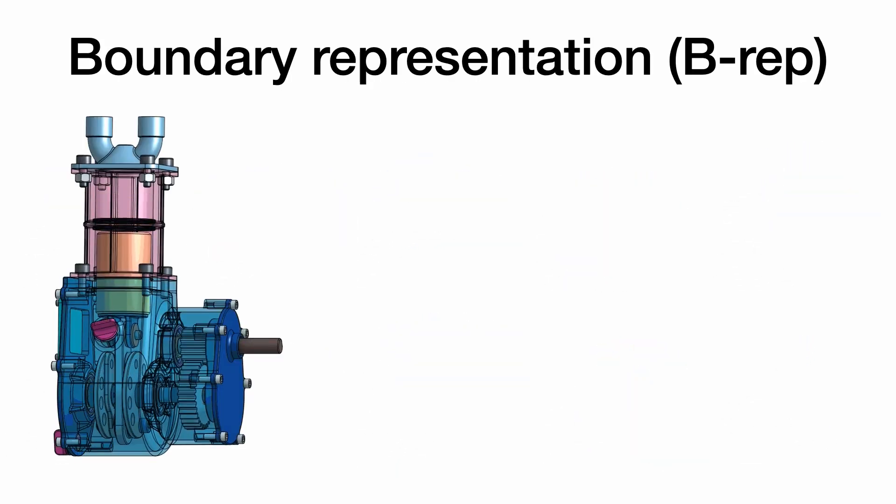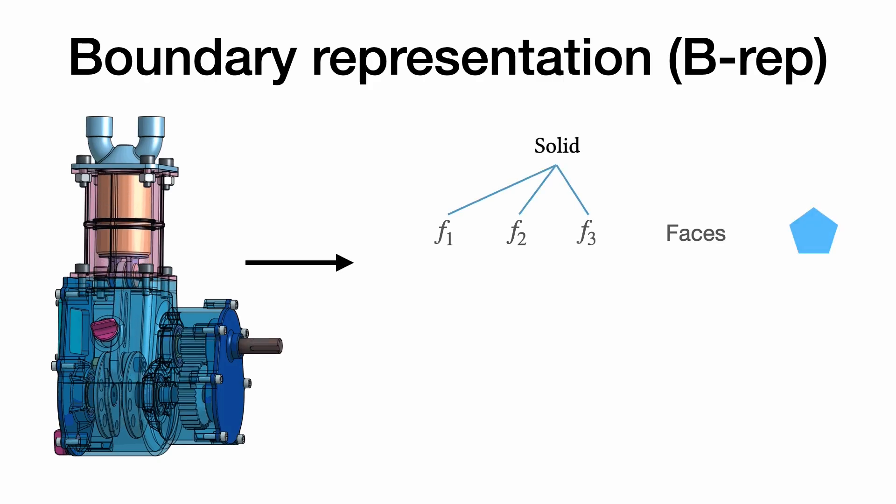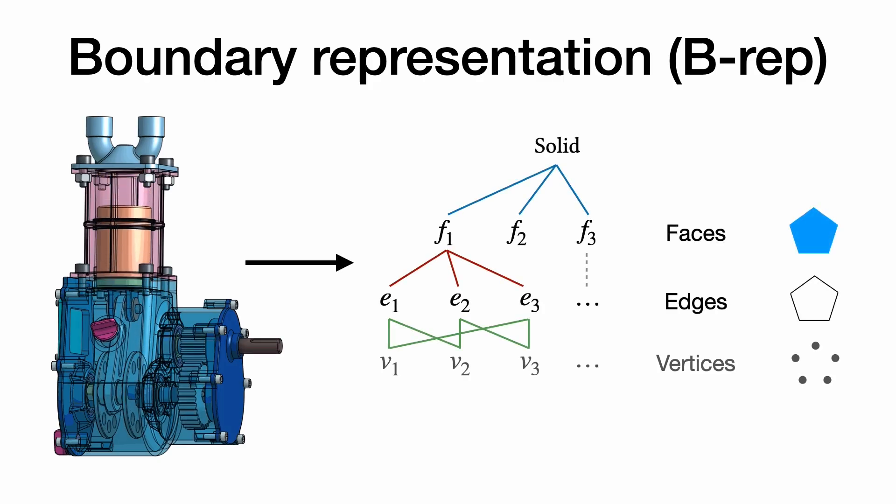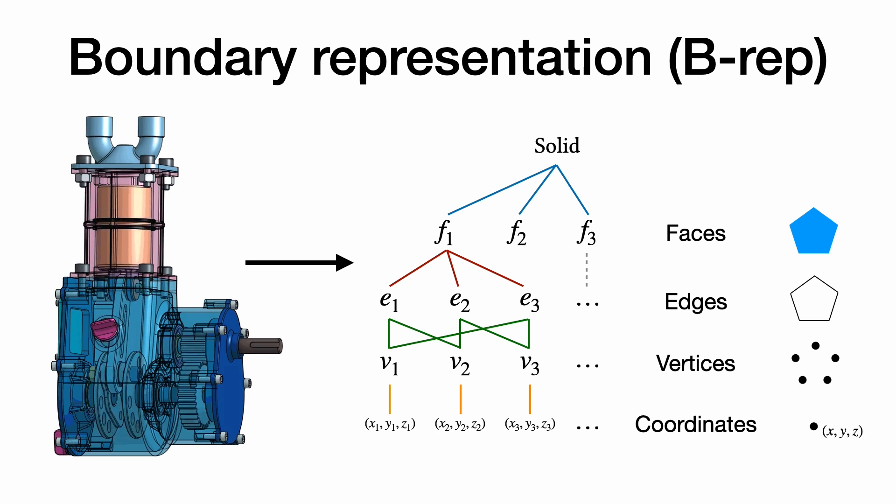The boundary representation, also known as B-rep, is the predominant format for 3D models in CAD applications. It describes solids through their surface elements—faces, edges, vertices—and their adjacency relationships, such as face-edge and edge-vertex.